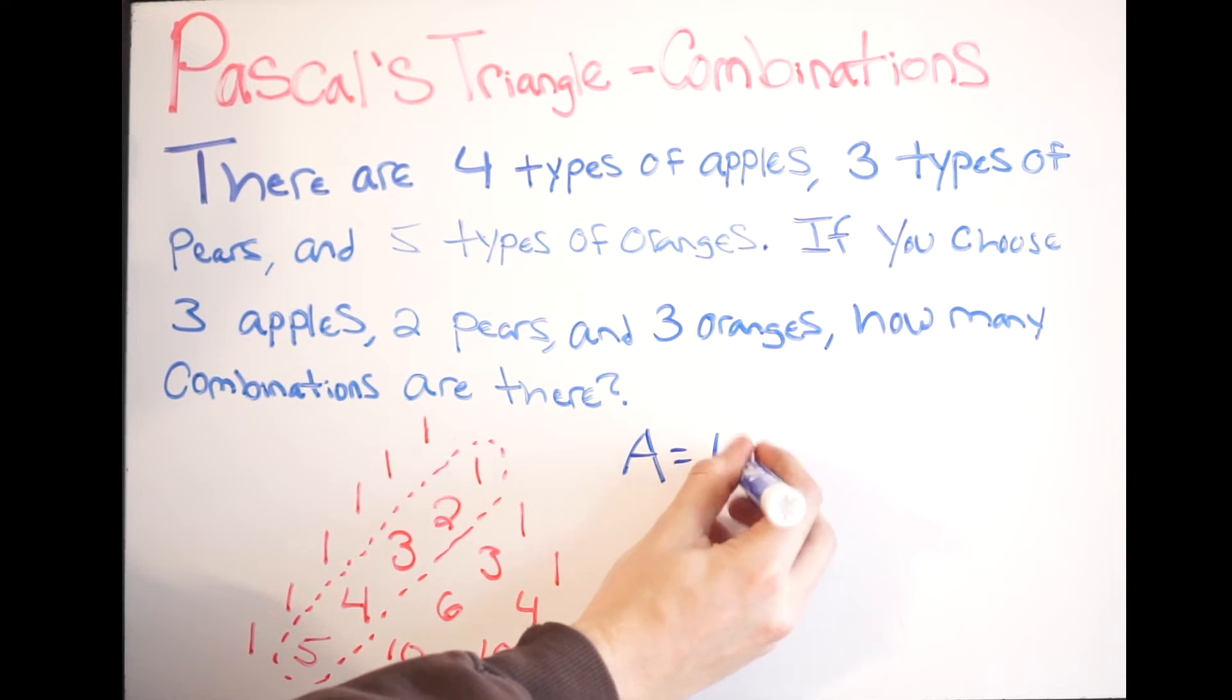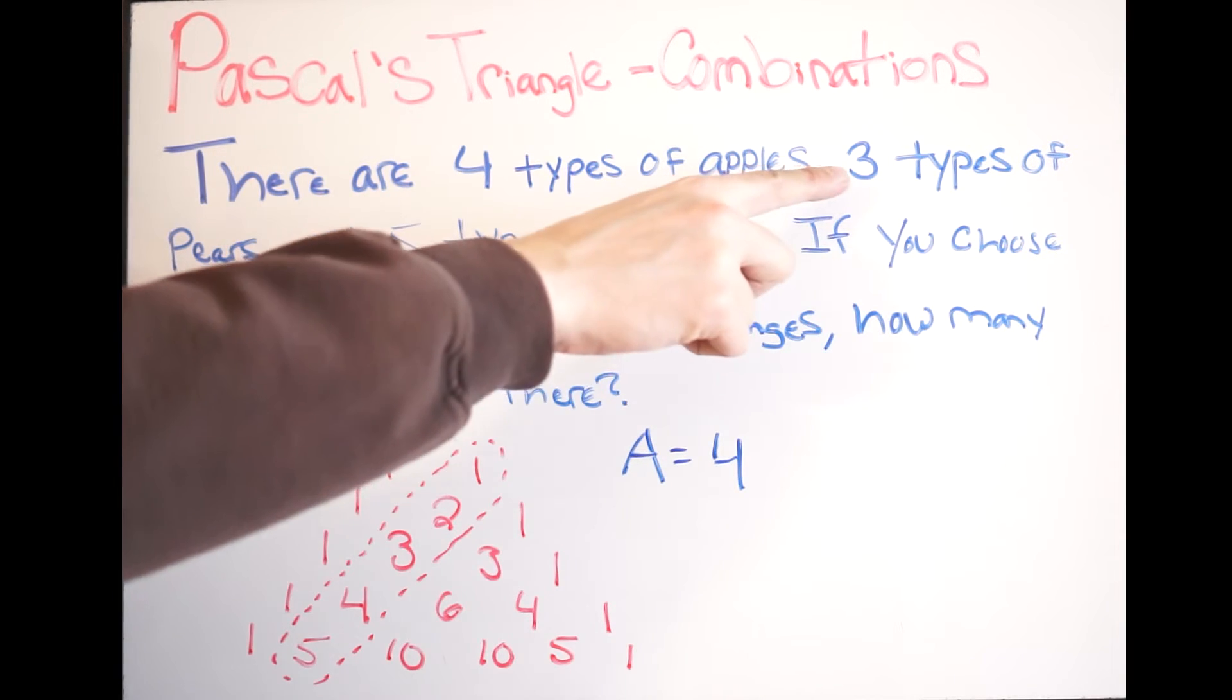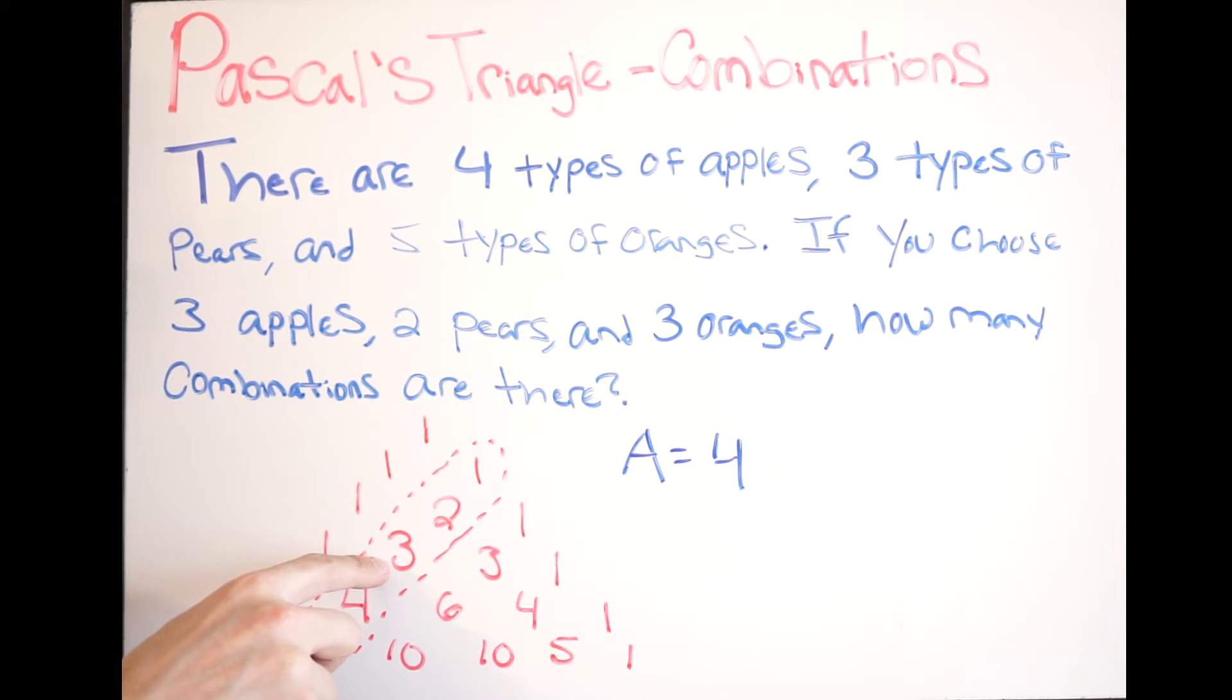Okay, let's do the same thing with the pears. So again, our total here is 3, so I'm using this row right here, these coefficients, and I'm choosing 2. So again, 0, 1, 2. So pears, that gives us 3, right? Because we landed on 3. There are 3 types of combinations.